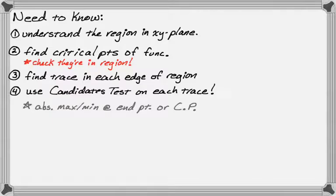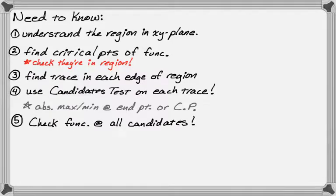With the candidates test, we know that the absolute max or min occurs at an end point or at a critical point. So really, it's the critical points we're going to need to worry about, because the end points we'll already have identified those. And then finally, we're going to check the function at each of the candidates. Alright, so let's get started.